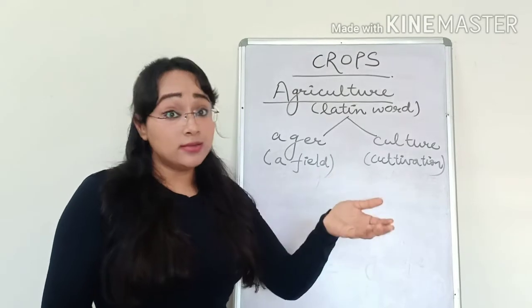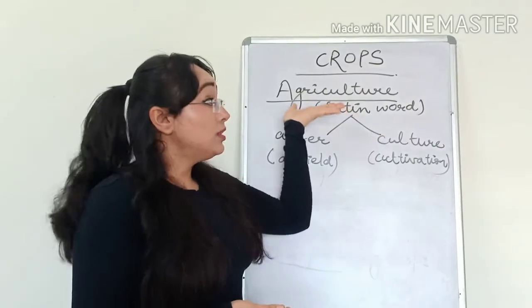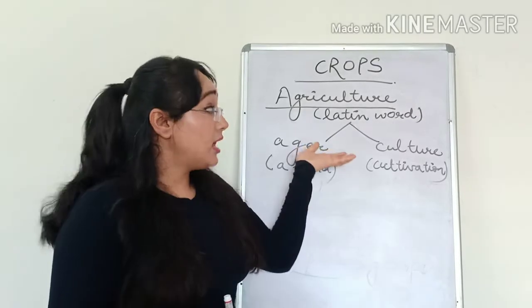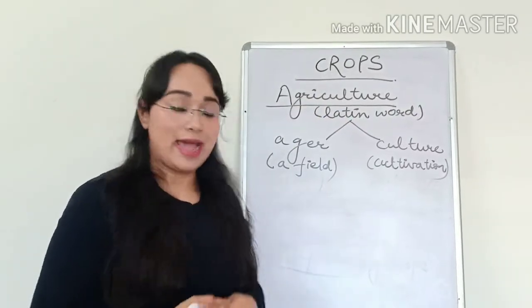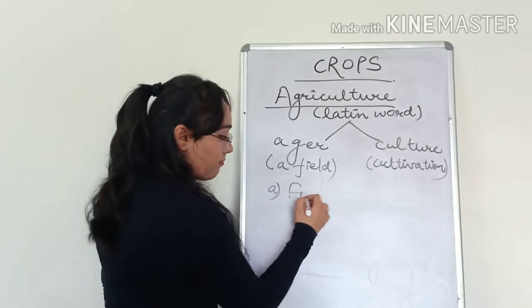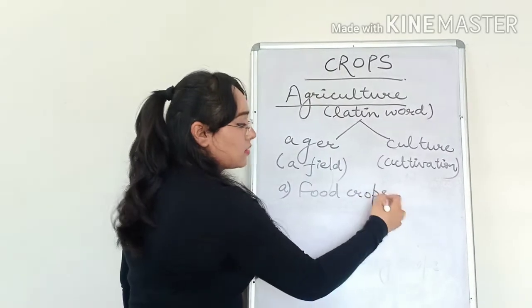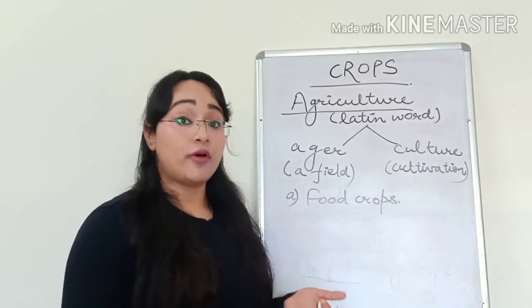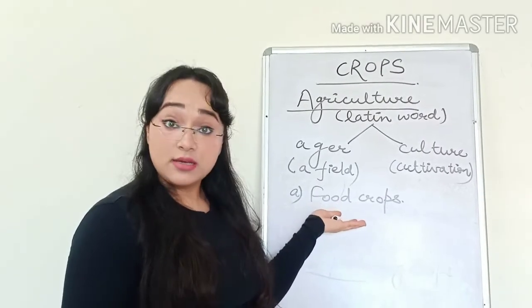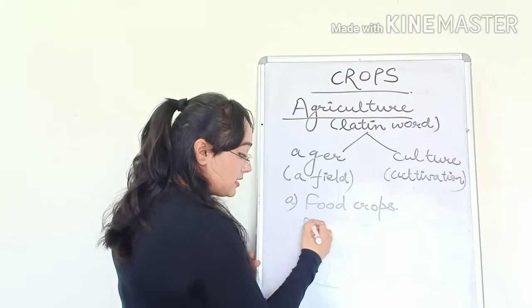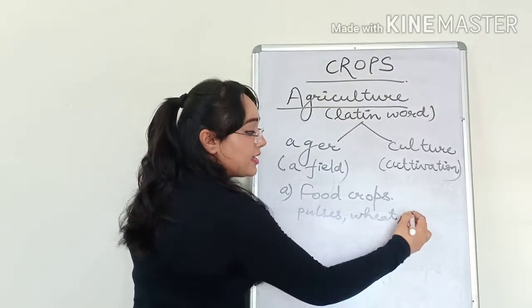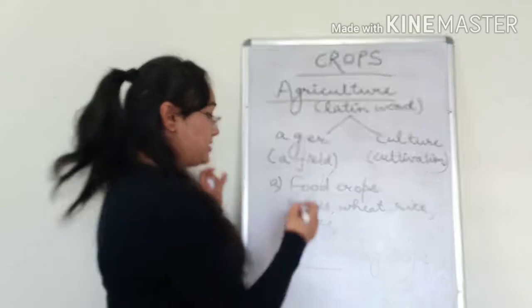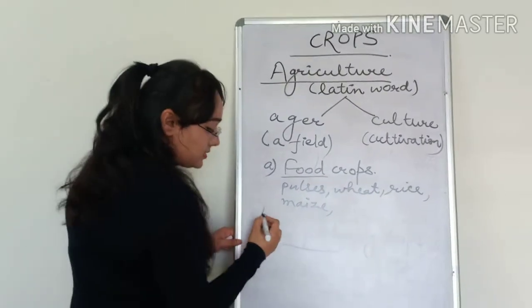When we cultivate large quantities of plants of different varieties, the practice is called agriculture. Many of your parents may be involved in this practice. In agriculture, when we grow the crops, crops are mainly of three kinds. First being food crops. Food crops are the crops grown to fulfill the requirement of our vegetables and various other needs. For example, pulses, wheat, rice, maize, and many other fruits come in this food category.